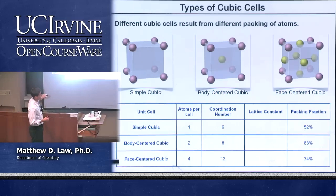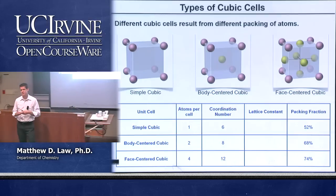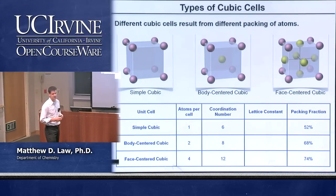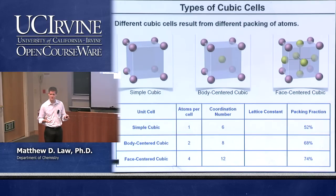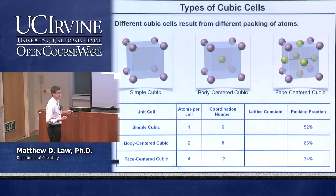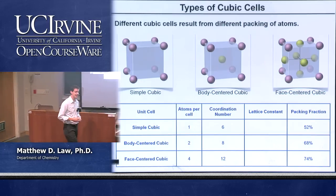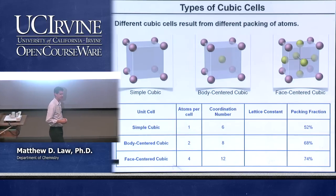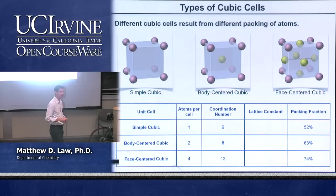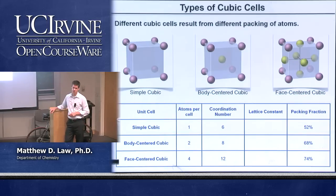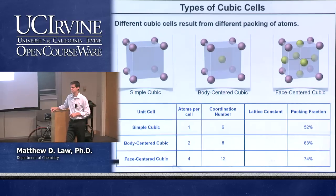The coordination number corresponds to a packing fraction — the total space-filling fraction of the spheres, considering them as incompressible spheres. The packing fraction increases from 52% to 68% to 74% going from SC to BCC to FCC. 74% — actually 74.05% — is the maximum packing fraction possible for single-sized incompressible spheres in three dimensions. We call this face-centered cubic structure a close-packed structure because you can't get any denser.